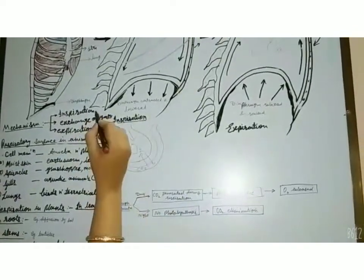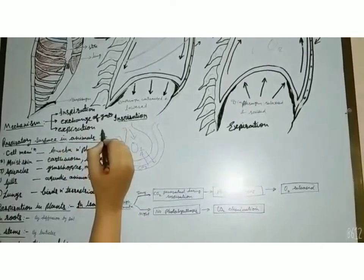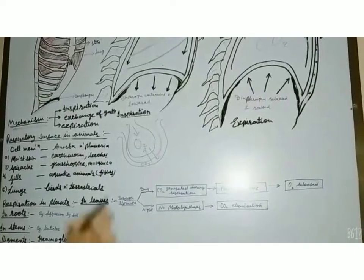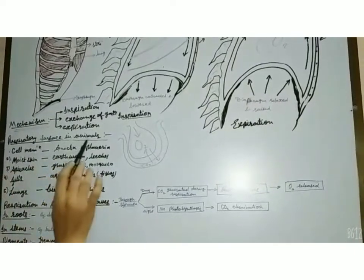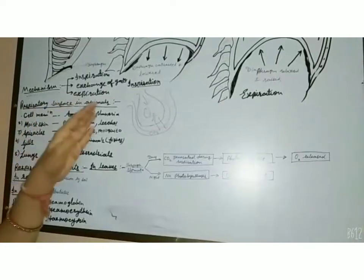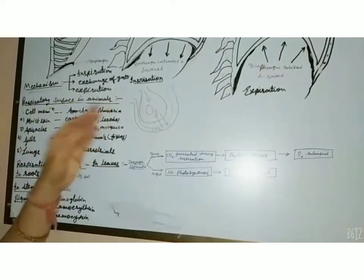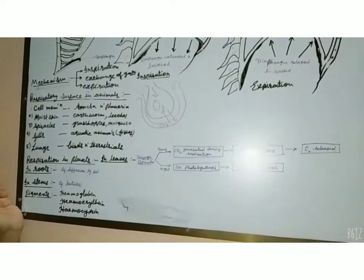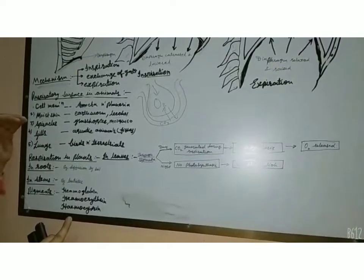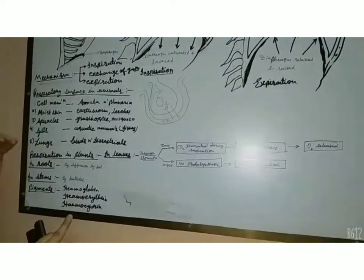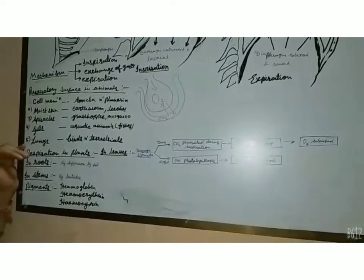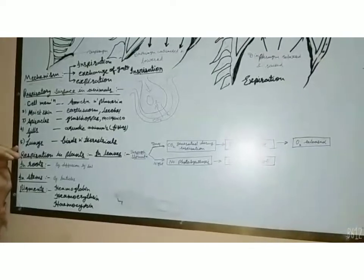So in this way, breathing is completed in three steps — inspiration, exchange of gases, and expiration — in higher animals such as human beings. Now let's understand the respiratory surfaces in other animals. Every animal has evolved different organs for this activity: different surfaces such as cell membrane, moist skin, spiracles, gills, and lungs in higher animals are the different body parts through which organisms perform respiration.